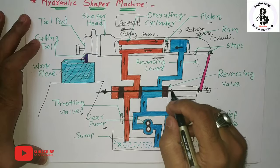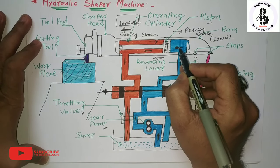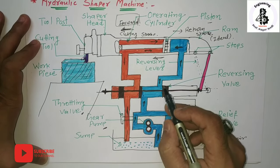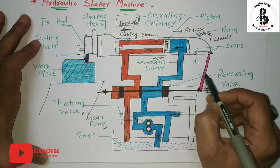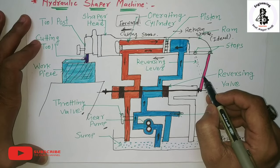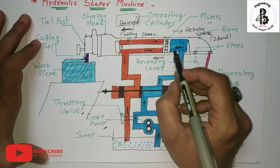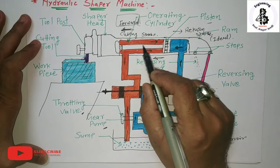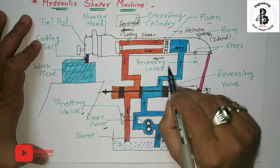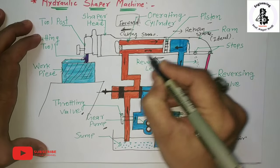During the return stroke, the oil on the right side of the cylinder is discharged to the sump through the throttle valve. At the end of the stroke, another stop hits against the reversing clamp, changing the direction of travel of the piston, and the cycle is repeated. By the application of high pressure oil, both forward and return strokes are achieved through this switching mechanism.